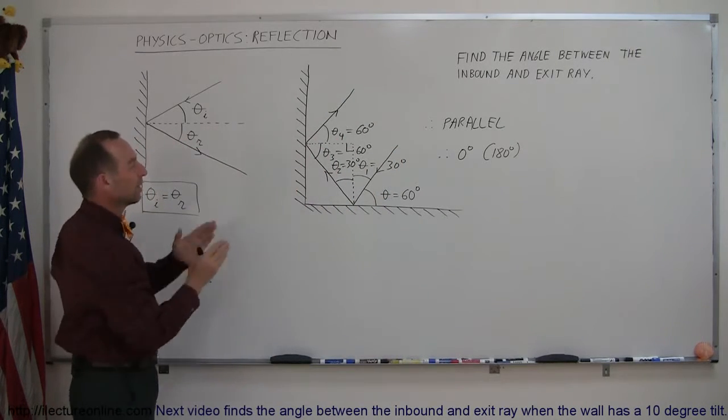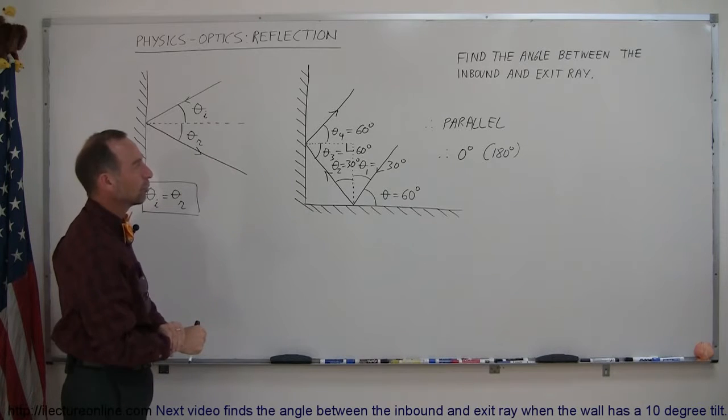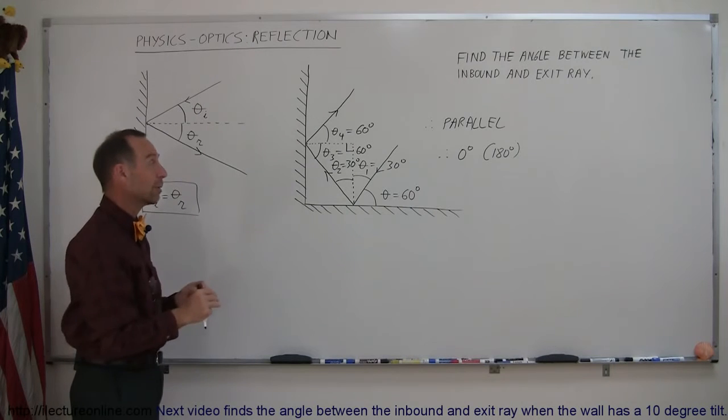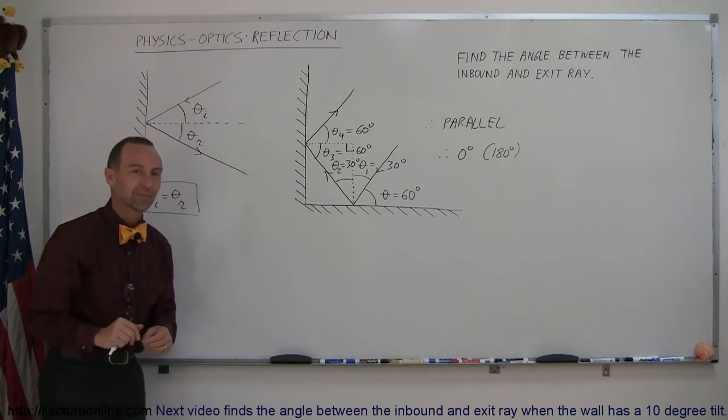But technically speaking, you could say that the angle between the two rays is 0 degrees. All right, so there's a simple example. Let's do one that's a little bit more challenging on our next video.